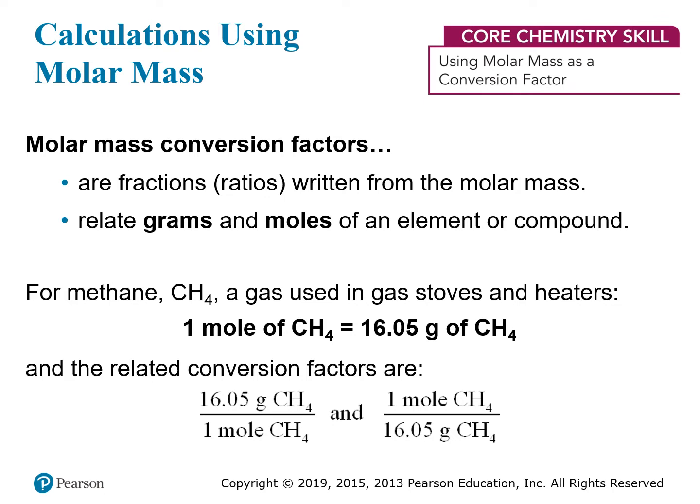For example, if you have methane, the formula is CH4 — one carbon atom and four hydrogen atoms. The carbon weighs 12.01 and the hydrogen weighs 1.01 each. So if you add all those together, you get 16.05 grams of methane. One mole of methane weighs 16.05 grams. We can think of this fundamental relationship in terms of two conversion factors: on the left, 16.05 grams of methane per mole, and on the right, one mole of methane per 16.05 grams. You can use either one depending on the context of the problem.